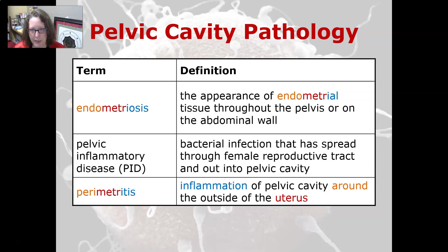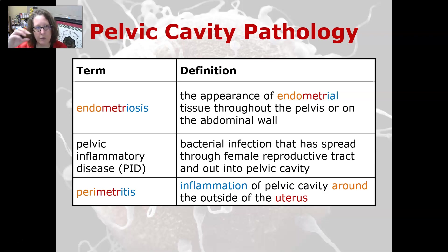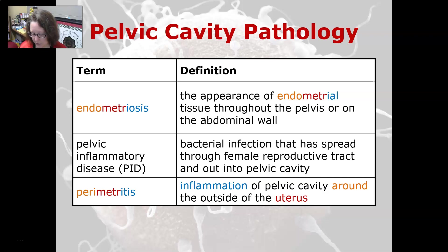A little bit about pelvic cavity pathologies. Endometriosis is the appearance of endometrial tissue throughout the pelvis or on the abdominal wall. Pelvic inflammatory disease, or PID, is a bacterial infection that has spread through the female reproductive tract and out into the pelvic cavity — because the fallopian tubes are open, anything that progresses to the fallopian tube can enter the pelvic cavity. Perimetritis is an inflammation of the pelvic cavity around the outside of the uterus.